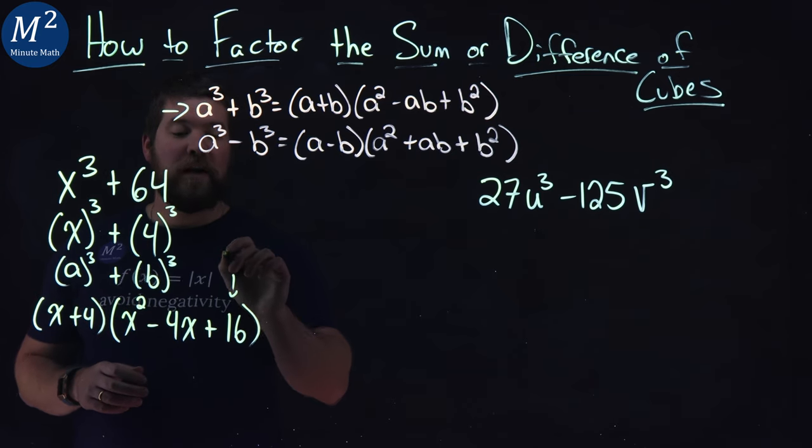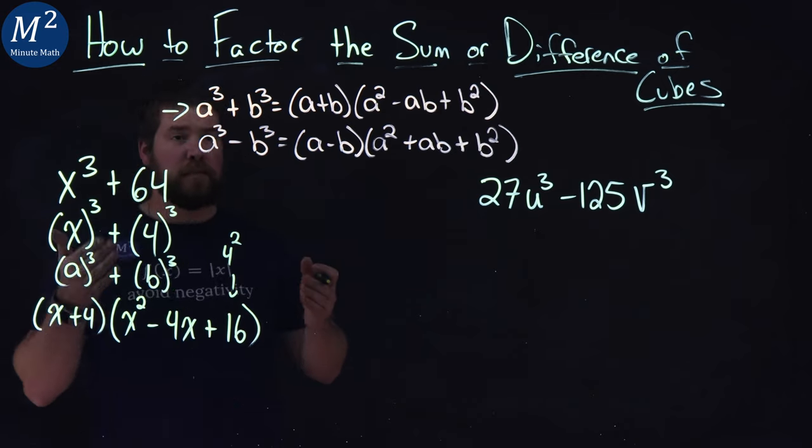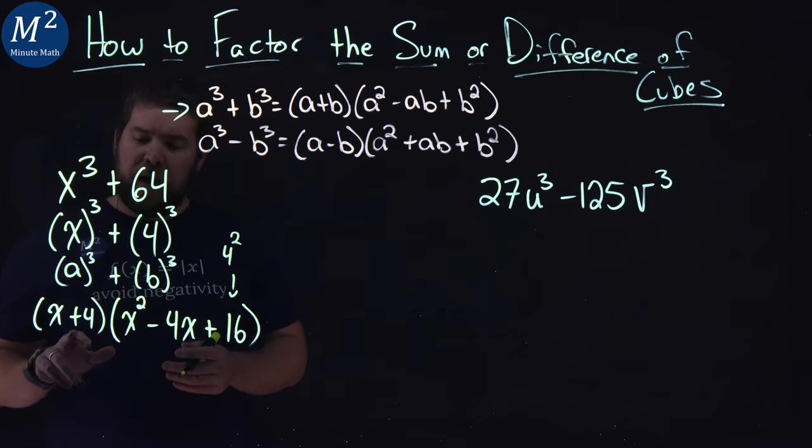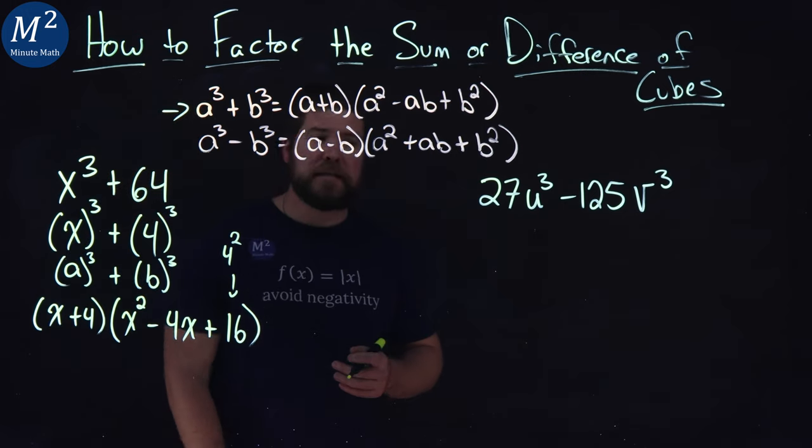And lastly plus a 4 squared and 4 squared is a 16 put a 16 right there. Again just in case you know that's a 4 squared is that 16. And there we have it.